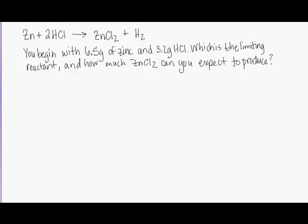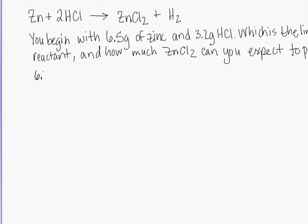In order to do a limiting reactant problem, you calculate how many grams or moles, depending on what the problem asks, of the product you can expect to get from each of the reactants individually. So first, we'll calculate how many grams of zinc chloride we can expect to get from 6.5 grams of zinc. We will ignore completely the amount of HCl involved as we're doing this calculation. At this point, our calculation is a standard stoichiometry calculation.